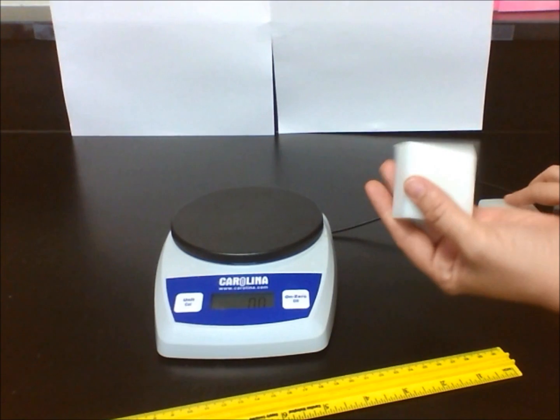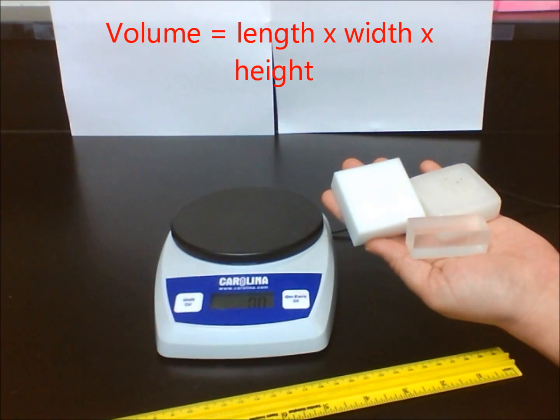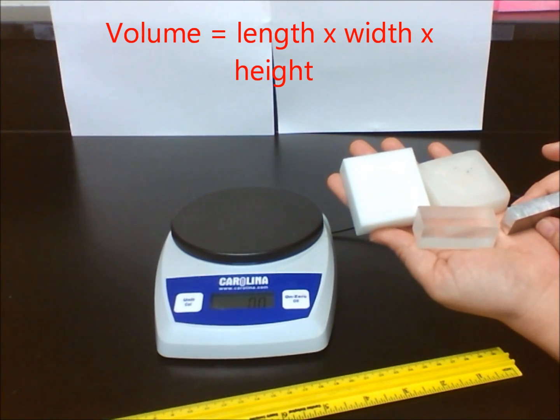In this lab, we will find the density of different regularly sized objects or blocks. In order to find the volume, I am going to use the formula length times width times height.